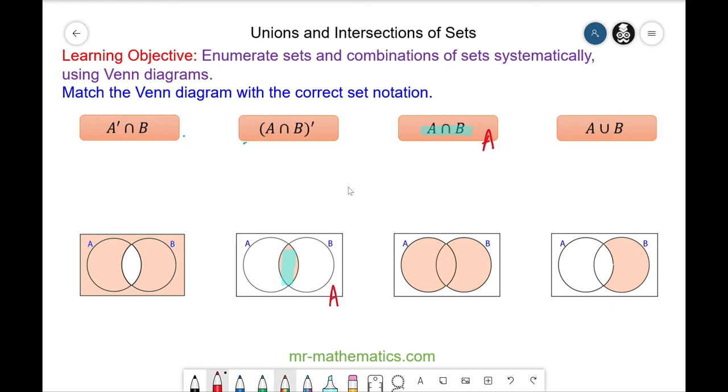And if we know this is true, then not A and B is the opposite area outside of the intersection. So this one would match with this one.